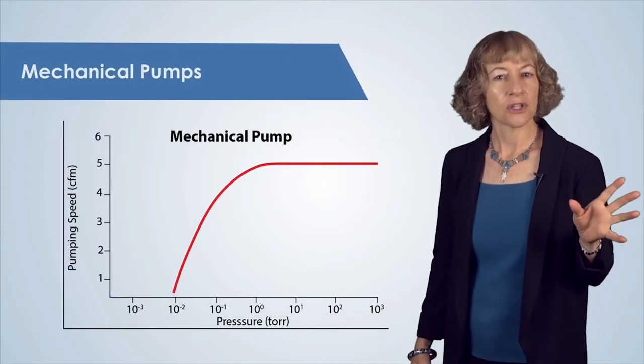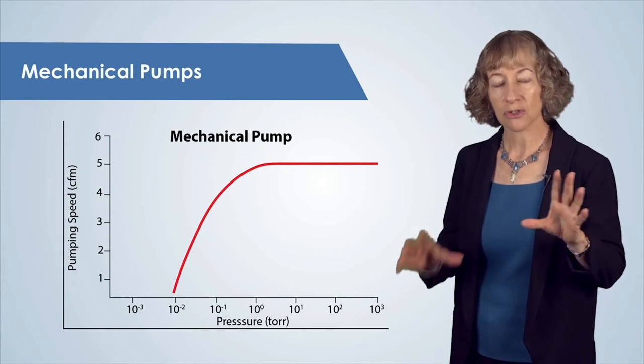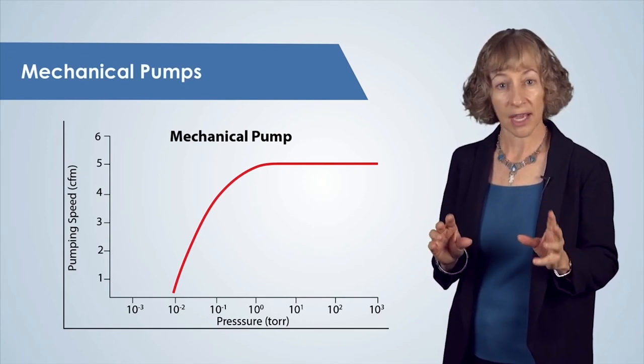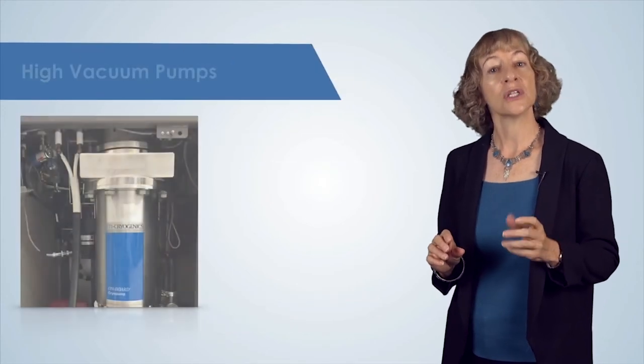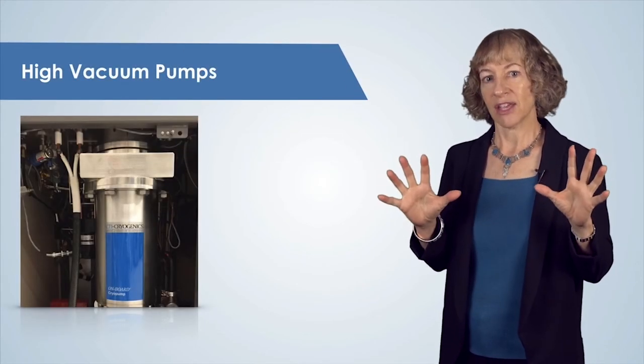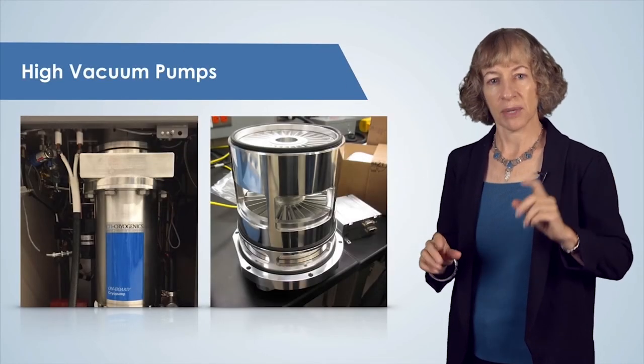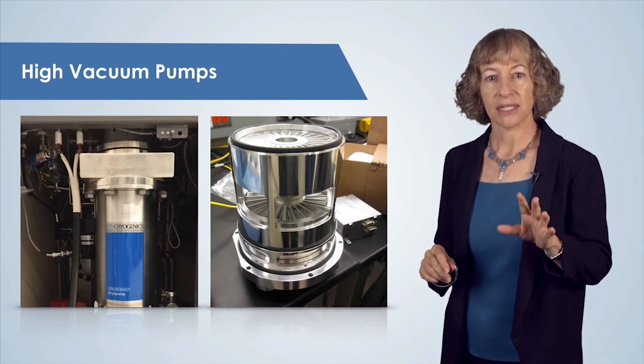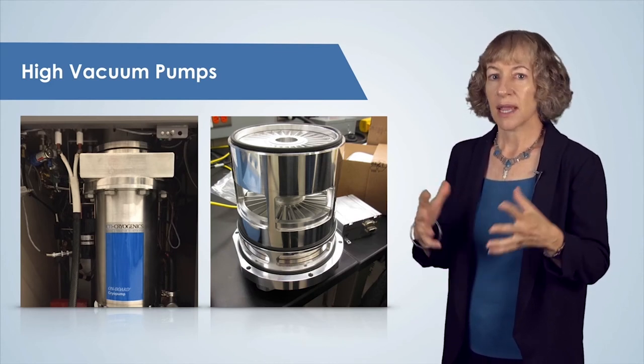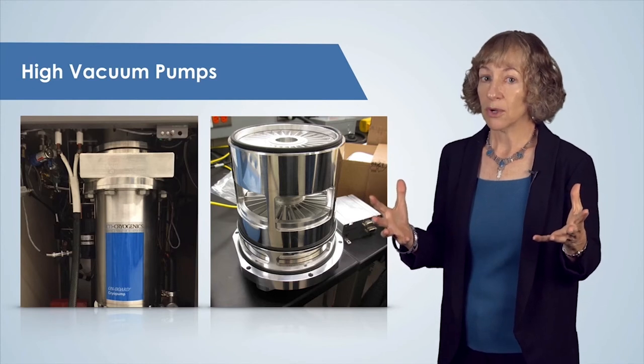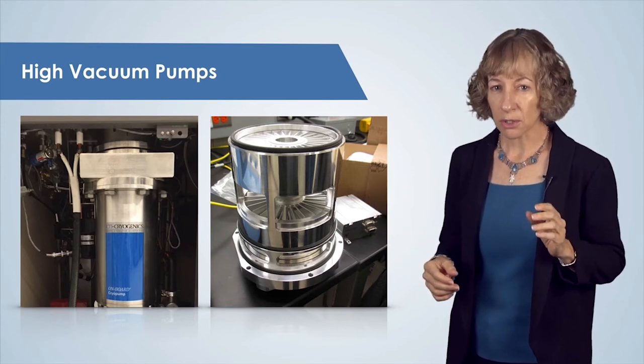Welcome back. I'm Nan Jokerst, and in this video we are going to talk about how to achieve low pressure, also called high vacuum, using a cryo pump. Mechanical pumps alone cannot typically reach pressures low enough for thin film deposition of high quality, so we need to use another pump — a high vacuum pump — in addition to the mechanical pump for high purity deposited thin films, since air molecules in the vacuum chamber will introduce impurities in the film.